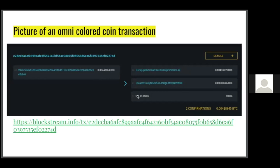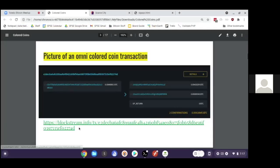The colored coins are stored in an OP_RETURN output. OP_RETURN is a function within Bitcoin's scripting language that allows you to add any text onto the blockchain — up to 80 bytes, which is about 160 letters or numbers. Other nodes on the network don't validate the content of that text; it could be anything. Miners also don't care, as long as it's under 80 bytes, they'll just process it and put it in a block.